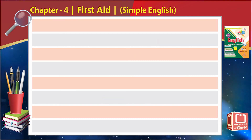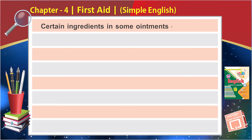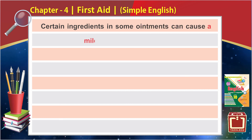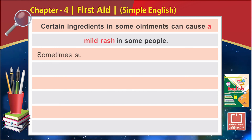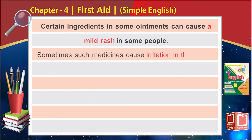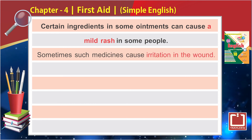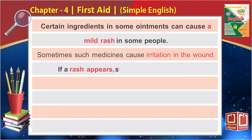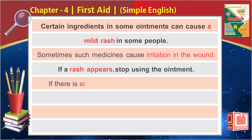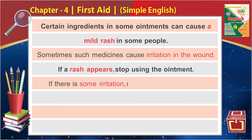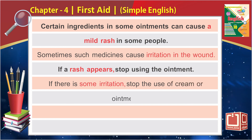Aur last line hai: 'Certain ingredients in some ointments can cause a mild rash in some people.' Simple English: Sometimes such medicines can cause irritation in the wound. Toh agar aisa ho toh kya karein — 'If a rash appears, stop using the ointment.' Simple English: If there is some irritation, stop the using of cream or ointment.